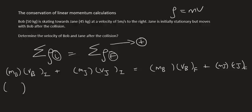The mass of Bob is 50. The velocity of Bob is 5, and he is going to the right, so we chose right as positive. So that's going to be positive. The mass of Jane is 45, and they tell us that she's initially stationary, meaning she's not moving.